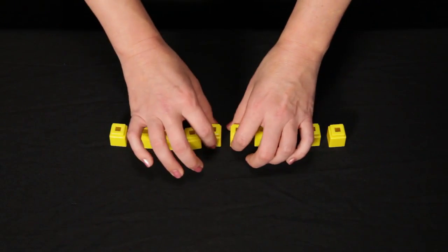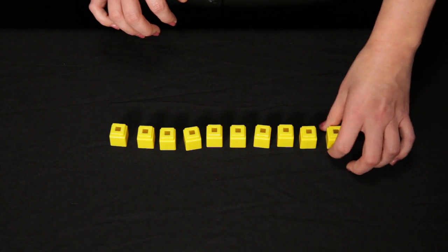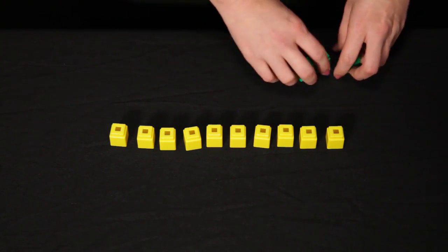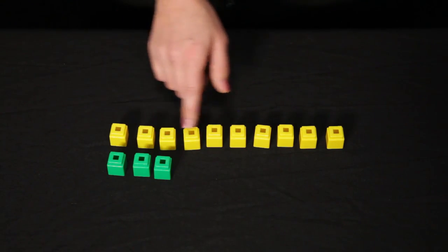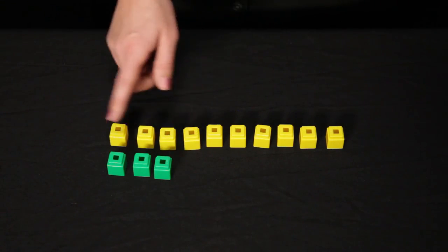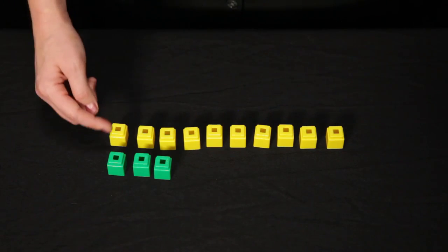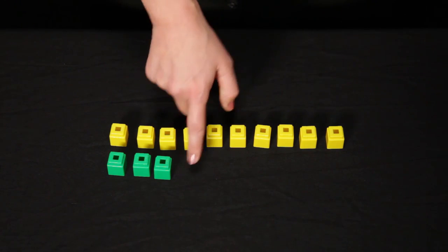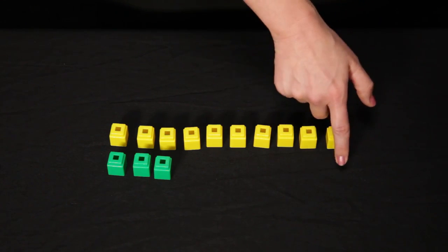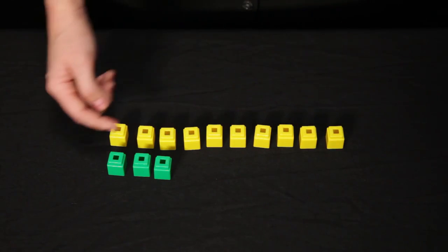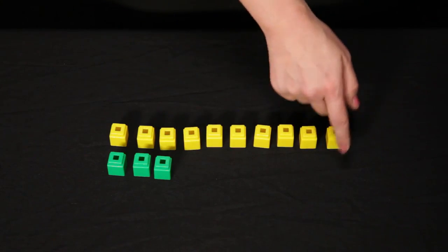Here I have my set of 10 objects, and I'm going to compare that to a set with 3 objects. So when I compare 10 and 3, what is the difference between these two sets? The difference is 1, 2, 3, 4, 5, 6, 7. So 10 minus 3 is the same as 7.